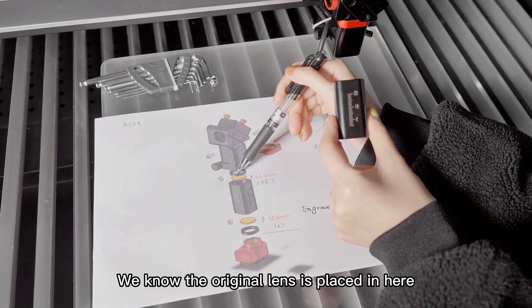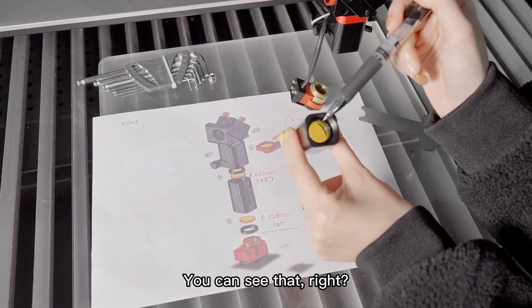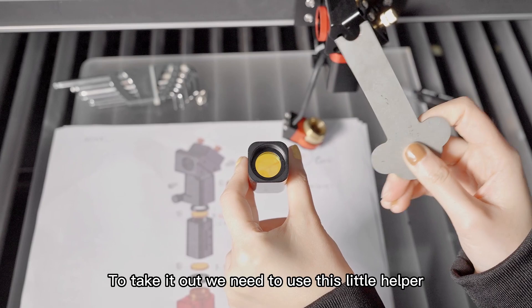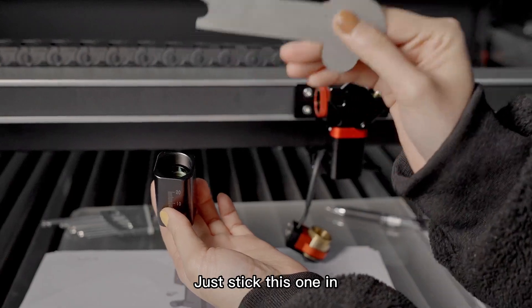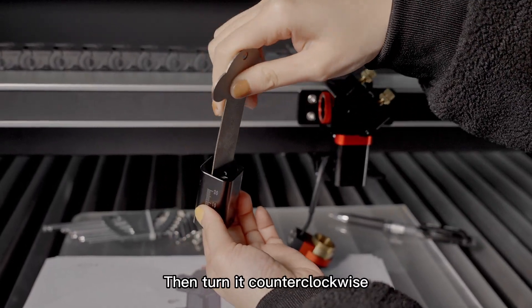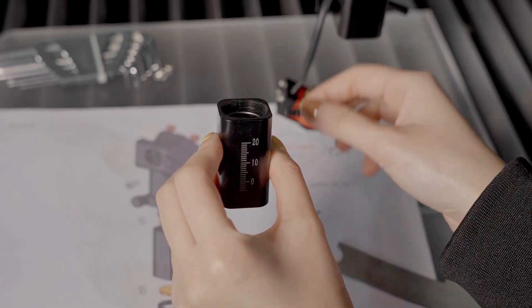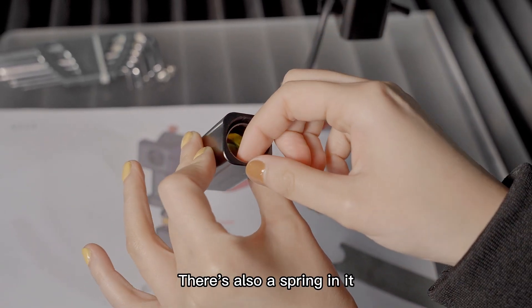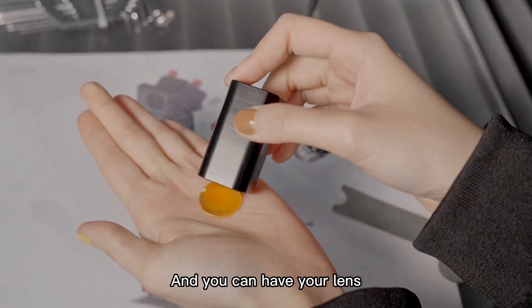We know the original lens is placed in here. You can see that, right? To take it out, we need to use this little helper. You see there are grooves on the spacer, right? Just stick this one in, then turn it counterclockwise and the spacer will come out. There's also a spring in it. Take it out and you can have your lens.